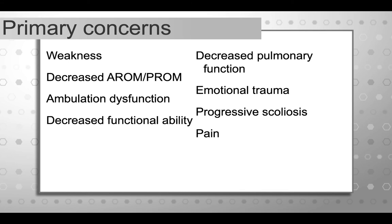We see pseudo-hypertrophy and toe walking, and that gait pattern can become an issue of safety — falls and tripping due to foot drop — so orthotic interventions may be needed. Functional ability decreases over time. Decreased pulmonary function is a huge concern because it becomes really dangerous for boys with muscular dystrophy later in life. The emotional trauma of having an incurable, life-shortening condition is devastating, and we can't underestimate the needs of the family and the child for emotional support. Progressive scoliosis and pain are also concerns.